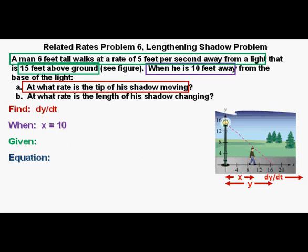And we're given a few items to consider. The height of the lamp is 15 feet. The height of the man is 6 feet. And the rate of the man walking is 5 feet per second. So the 5 feet per second we define as dx/dt equals 5 feet per second.